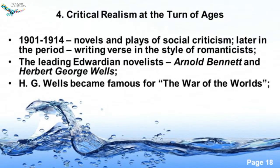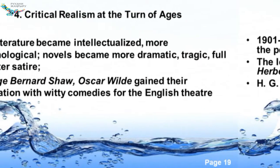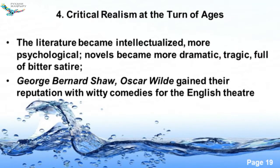Critical realism at the turn of ages. A specific period of about 10 years can be presented with novels in place of social criticism, and the writers tend to use a style close to romanticism. The leading Edwardian novelists — because this period can be called Edwardian due to the reign of King Edward from 1901 to 1914 — are Arnold Bennett and Herbert George Wells. Herbert George Wells became rather popular for his mysterious and fantastic novels like The War of the Worlds. The literature in general became more intellectualized, novels were more dramatic and tragic, and many novels were full of bitter satire. The examples can be the works of George Bernard Shaw and Oscar Wilde, who together with some short stories gained their reputation with witty comedies as well.